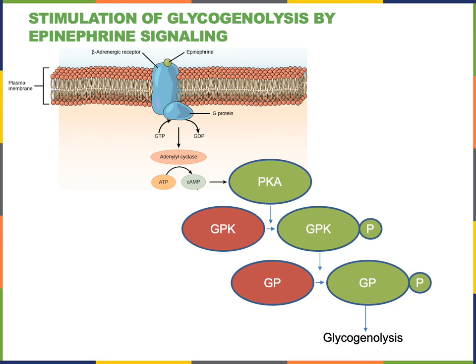Cyclic AMP binds to protein kinase A (PKA) and activates this enzyme. Once activated by cyclic AMP, PKA will phosphorylate GPK, which stands for glycogen phosphorylase kinase. Once activated by phosphorylation, glycogen phosphorylase kinase is the enzyme that catalyzes the hydrolysis of glycogen in the mechanism of glycogenolysis.